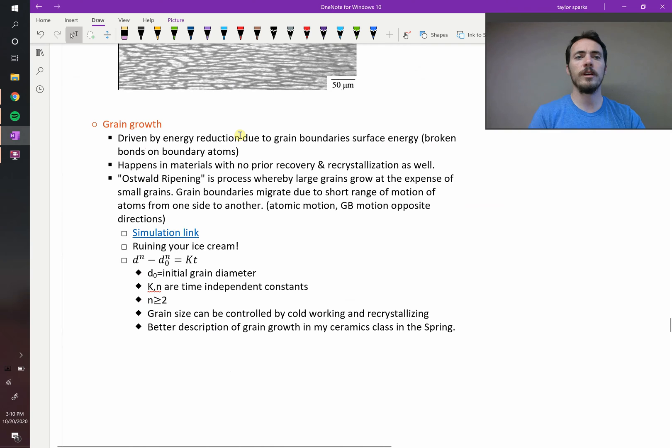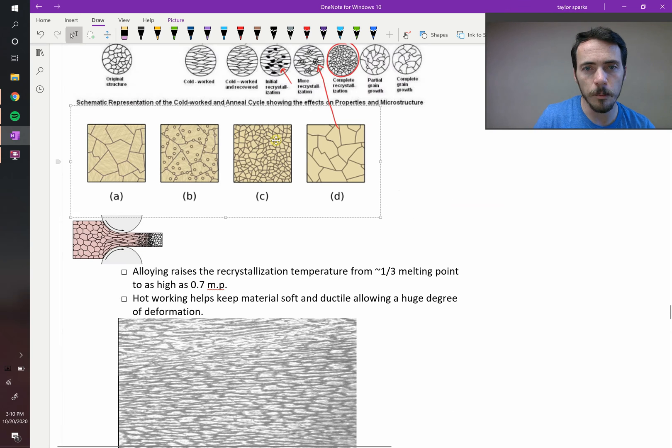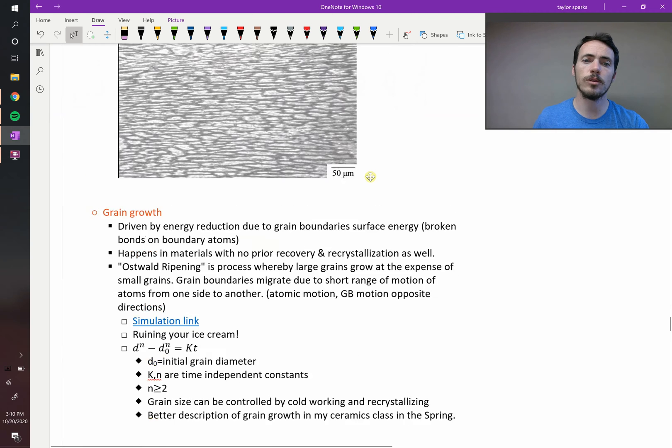Let's talk about grain growth for a minute. Why does grain growth happen? Well, take a look at this. Look at all the black lines here. If you added up all those black lines, it's much more in this one than this one. Black lines represent grain boundaries. Grain boundaries have surface energies. So the smaller your grains, the more surface energy that you have to deal with. So crystals don't want surface energy. They want to get rid of it by combining these together. So grains grow.